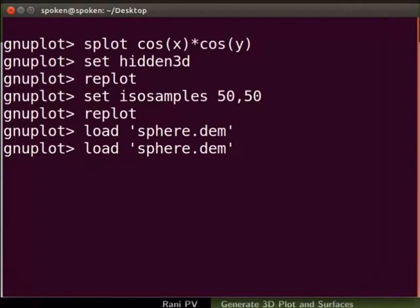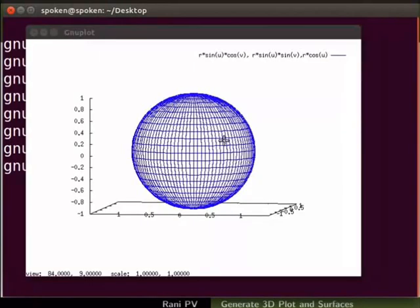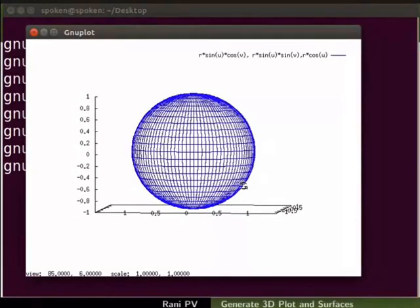In some systems, pressing the up arrow key scrolls through the command history. Notice the blue sphere on the graphics window.